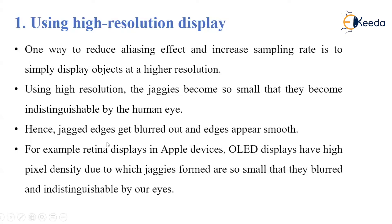For example, the retina display in Apple devices or OLED displays have the highest pixel density, due to which jaggies are so small and blurred that we cannot notice them. In this method, we are increasing the sampling resolution by treating the screen as if it is made up of much finer grids, due to which the effective pixel size is reduced.